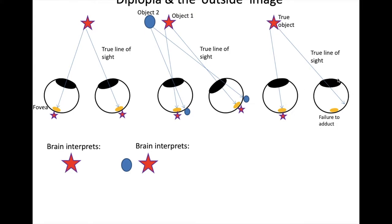You then have this eye, which has failed to adduct adequately. So it has movement restriction. And because that's happened, the light from the object no longer is hitting the fovea, but actually hits the retina to the side of the fovea.